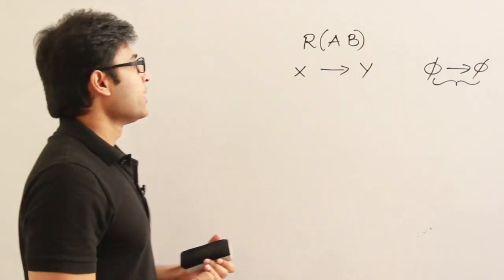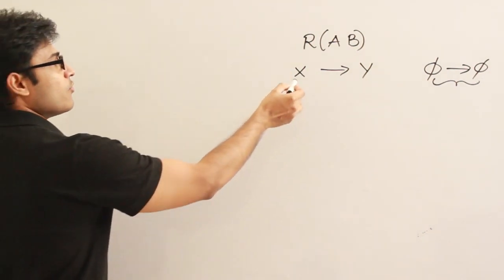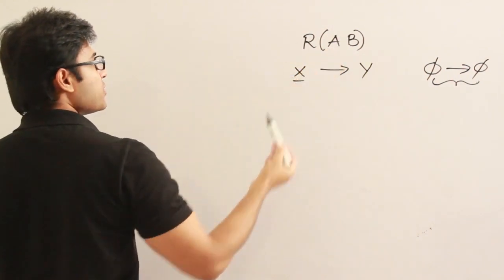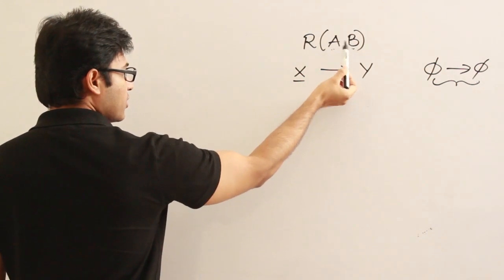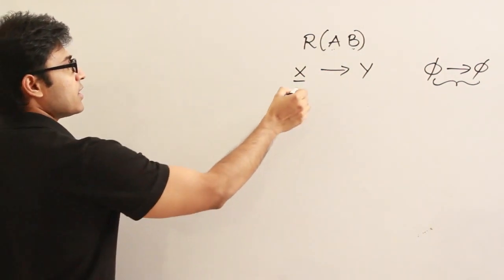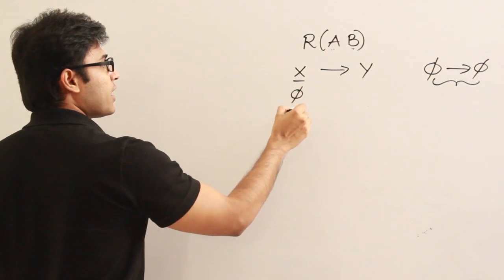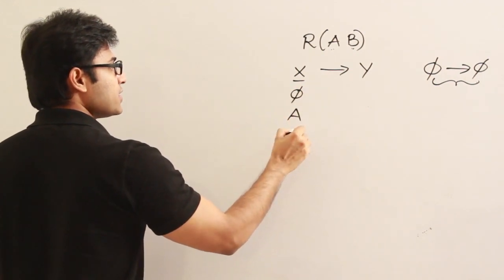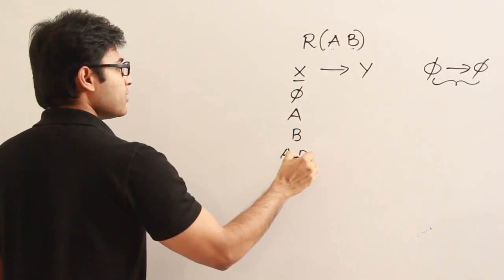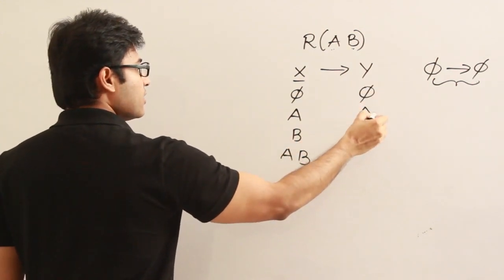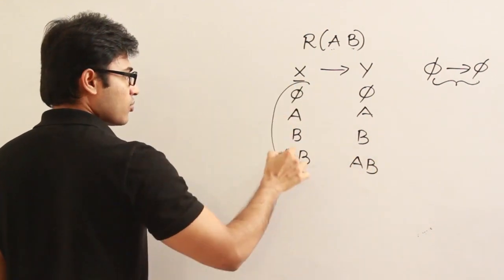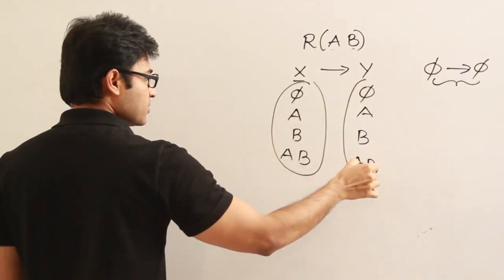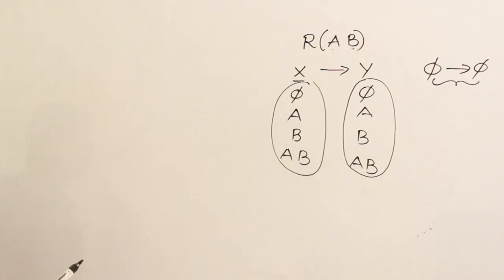I'm interested in finding the total number of functional dependencies possible for a table with only two attributes. For X, there are four possibilities — the subsets of {A, B} are: phi, A, B, and AB. The right side also has four possibilities: phi, A, B, and AB. So the total number of possible functional dependencies is 4 × 4 = 16.